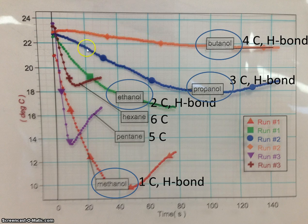The next steepest slope would be propanol. Propanol has three carbons and hydrogen bonding. And then probably the next steepest slope would be ethanol. Ethanol has two carbons and hydrogen bonding.